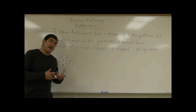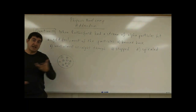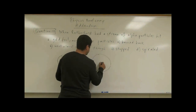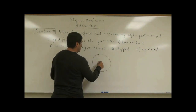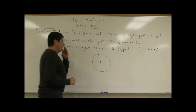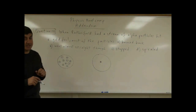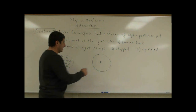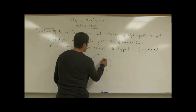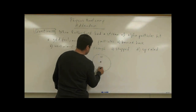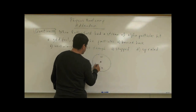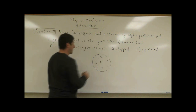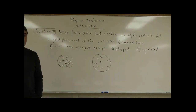The other model of the atom proposed that the positive charge was at the nucleus, at the center of the atom, and then the negative charges were distributed all around the outside.